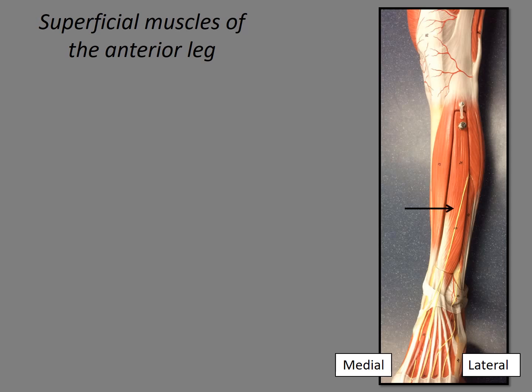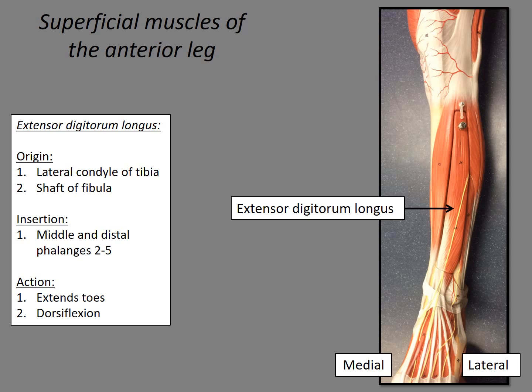The next muscle, indicated by the arrow, has a tendon that spreads out to the digits — the toes. This is our extensor digitorum longus. The origin is the lateral condyle of the tibia and also the shaft of the fibula. The insertion is the middle and distal phalanges two through five. The action is to extend the toes and also to dorsiflex the foot. Remember that dorsiflexion is pointing your toes up, superiorly.